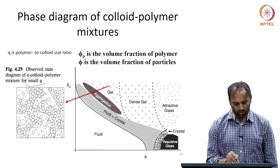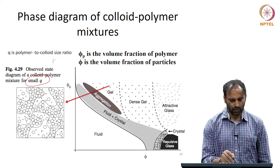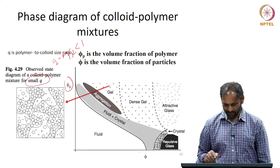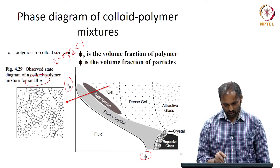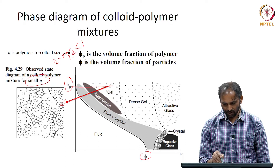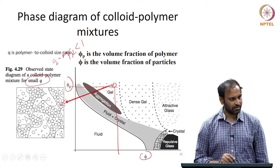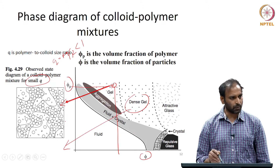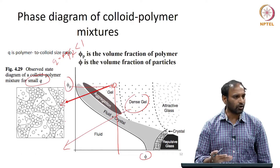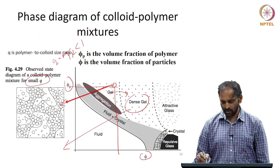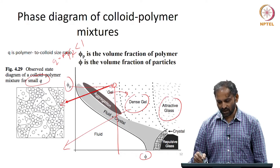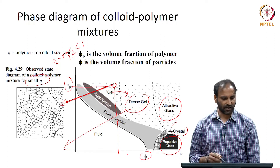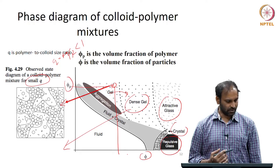This is the small Q case, where Q (Rg/R) is smaller than 1, shown in the same φp versus φ plot. At certain polymer-particle concentrations you have gel-like behavior. With more concentration of particles, you could have a dense gel — a space-spanning network with a higher modulus. At sufficiently high particle concentration, you can have glasses, crystals, or repulsive glasses. This broadly covers the different states observed in colloid-polymer mixtures.